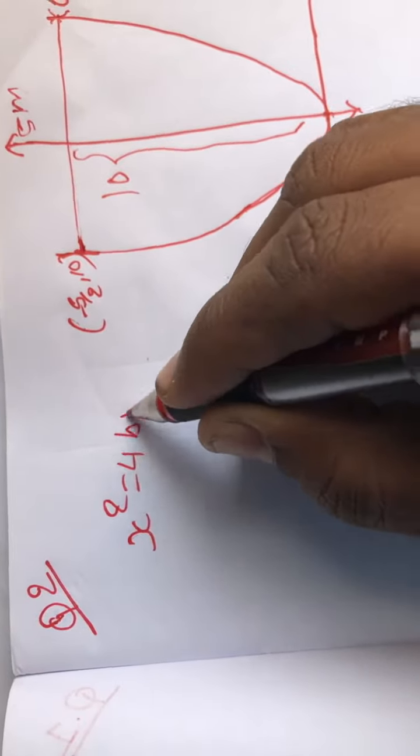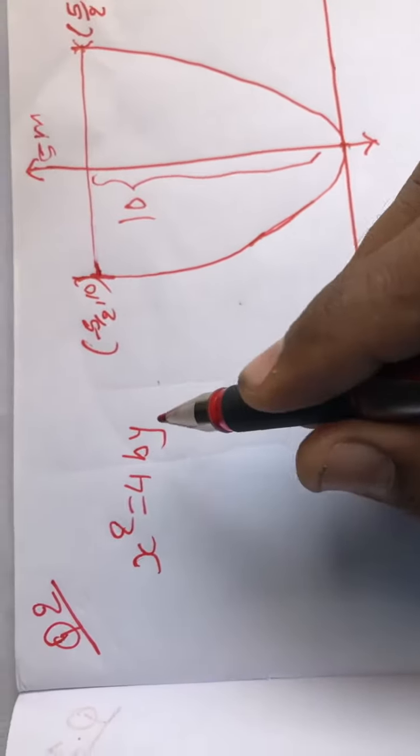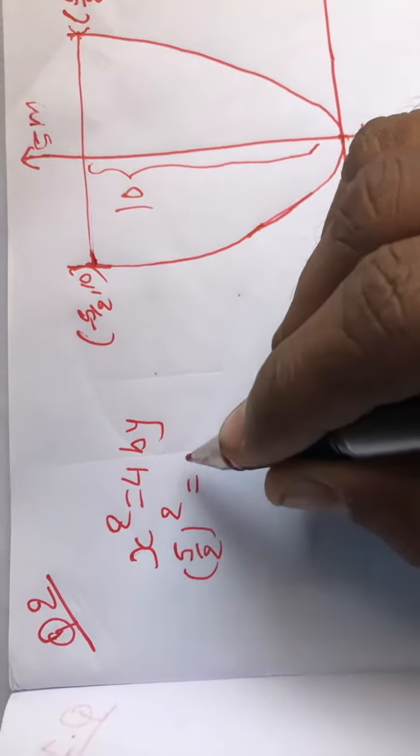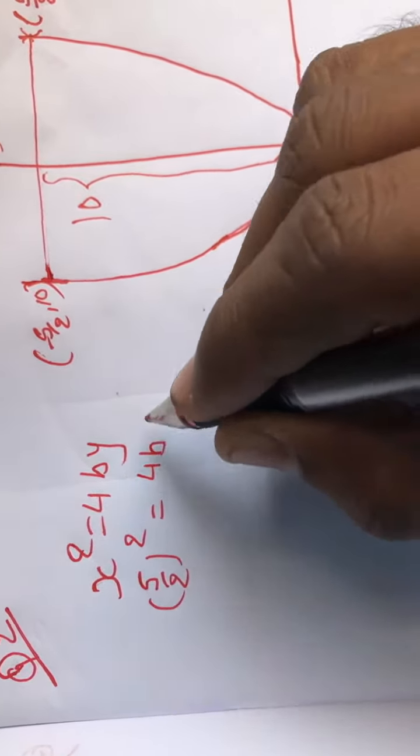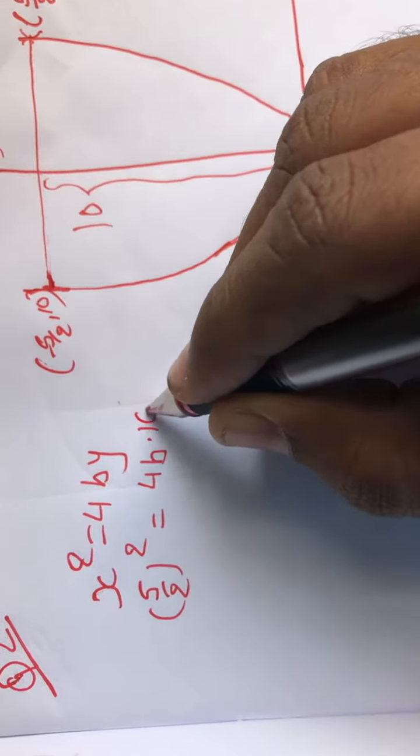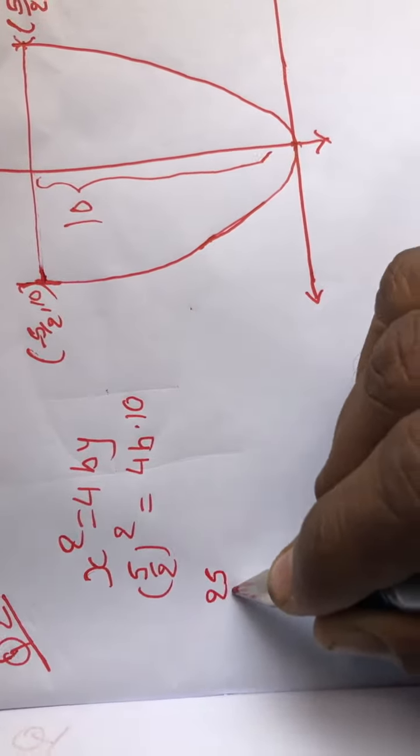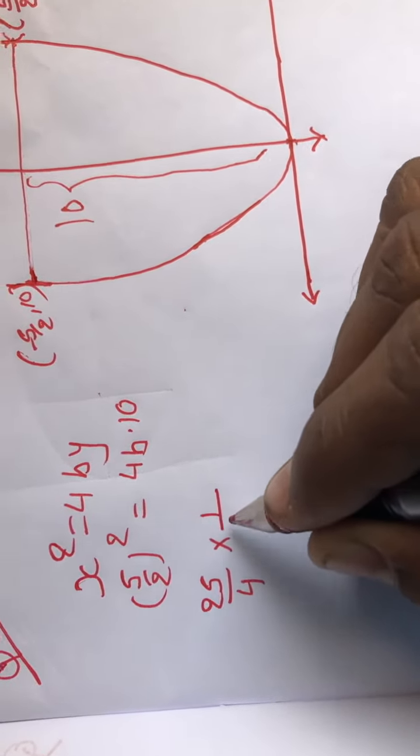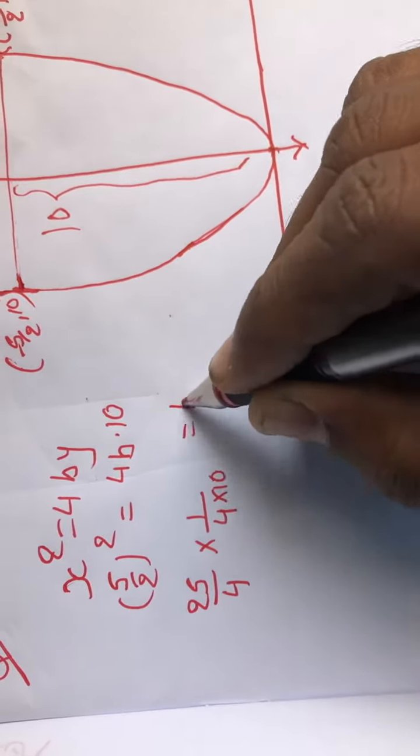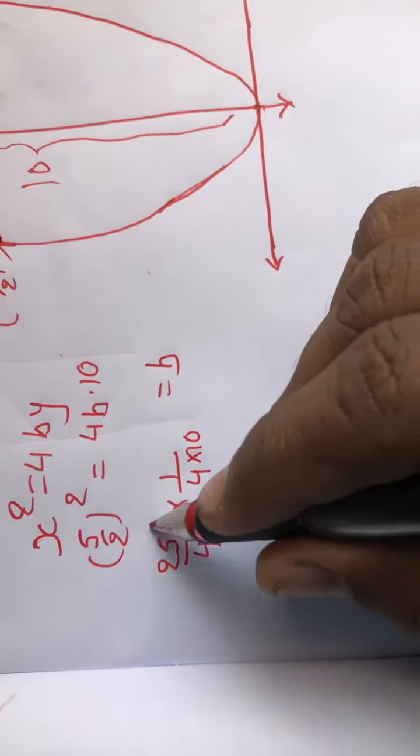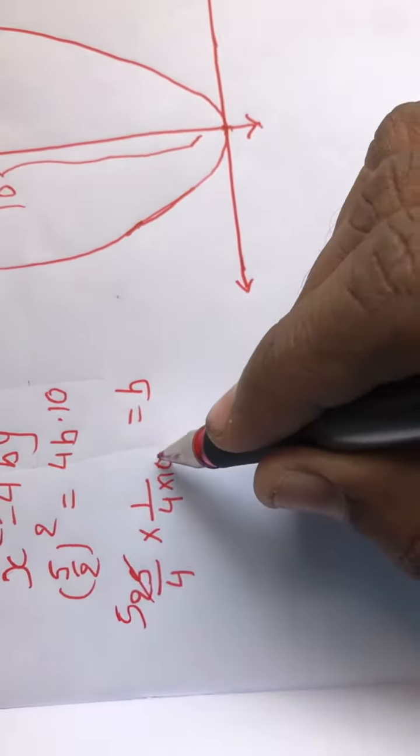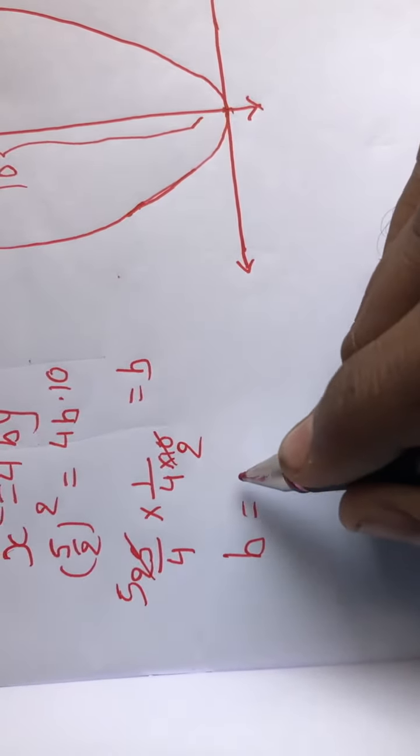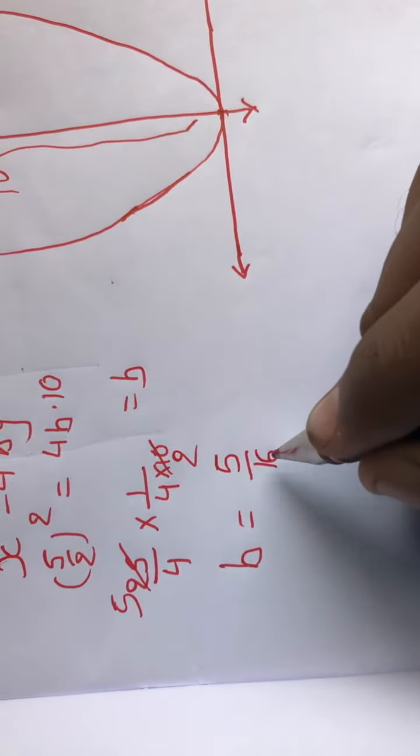x square equals 4 b y. 5 by 2 and 10 - so b will be 5 by 16.